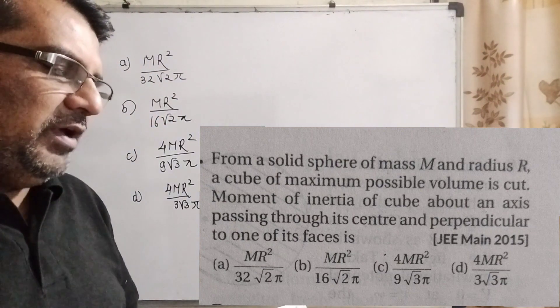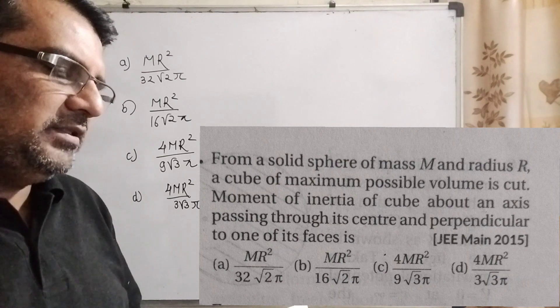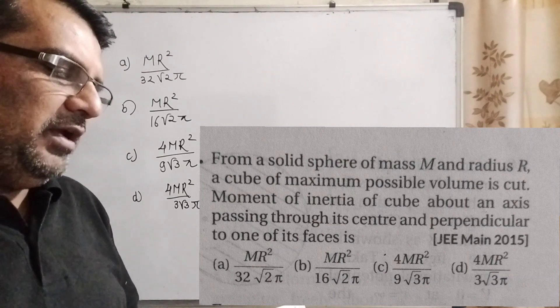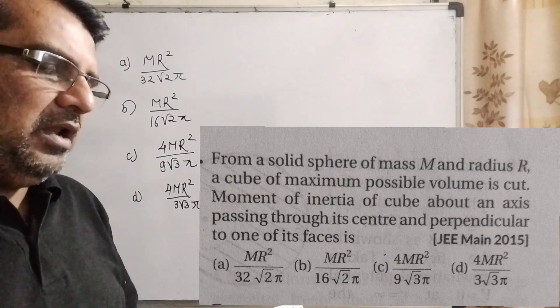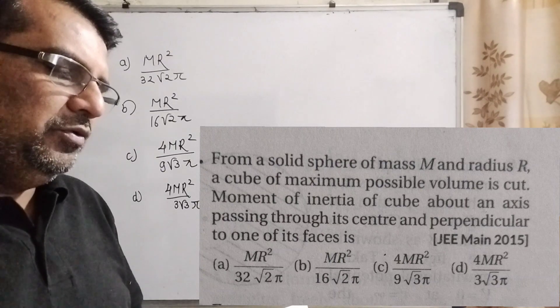First, MR² / (32√2π). Option B, MR² / (16√2π). Option C, 4MR² / (9√3π). And last option D, 4MR² / (3√3π).